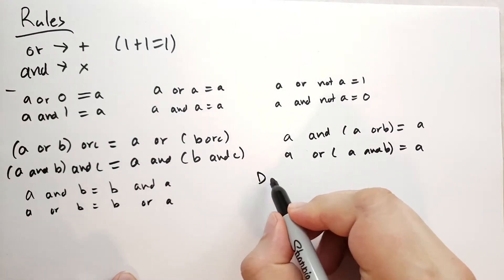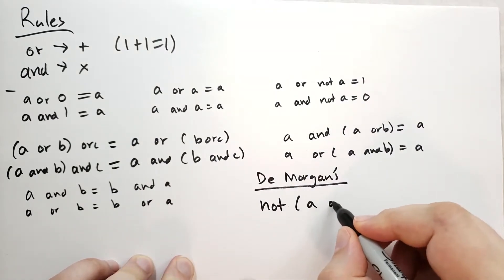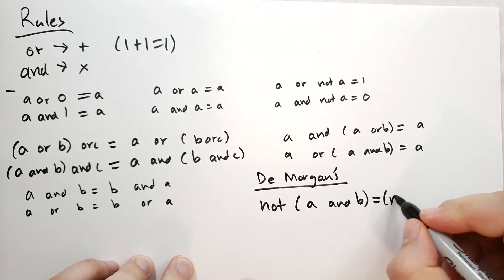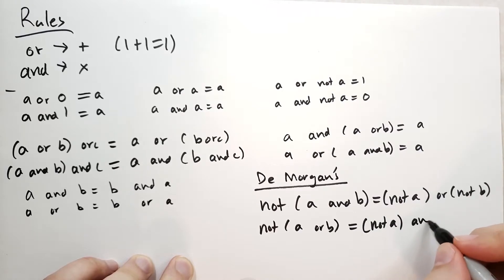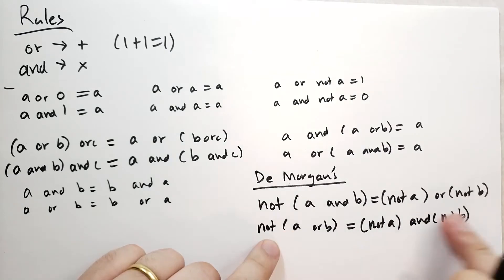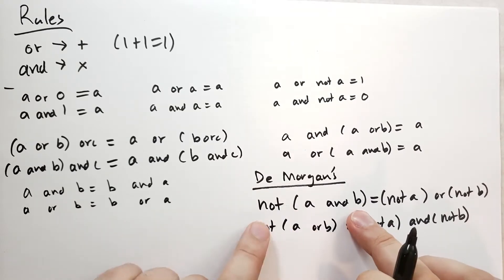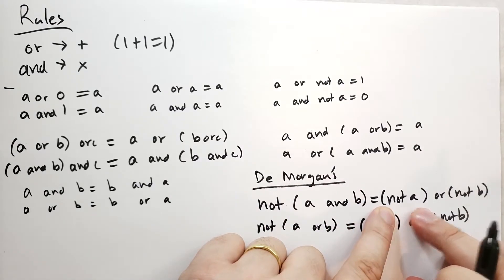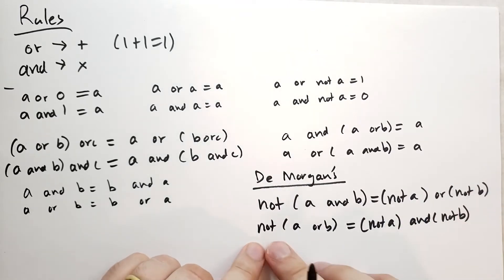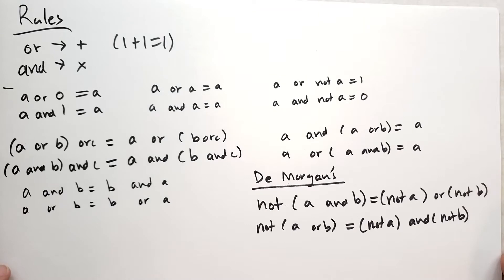And finally, I wanted to talk about DeMorgan's. This is one that actually arises quite often. And what DeMorgan's says is that if you have NOT (A AND B), that's the same as NOT A OR NOT B. And if you have NOT (A OR B), that's the same as NOT A AND NOT B. If you read this out with some conditions, right? For instance, let's say it's raining and it's Thursday. A is it's raining, B is it's Thursday. So if it's not raining and Thursday, that means either it's not raining or it's not Thursday. And on the other hand, if it's not raining OR Thursday, that means it is not raining AND it is not Thursday. So that's the way to think of that.